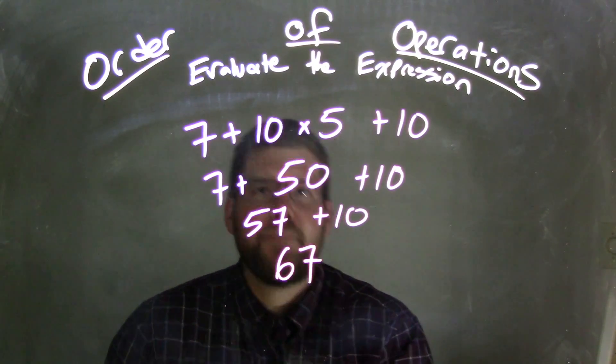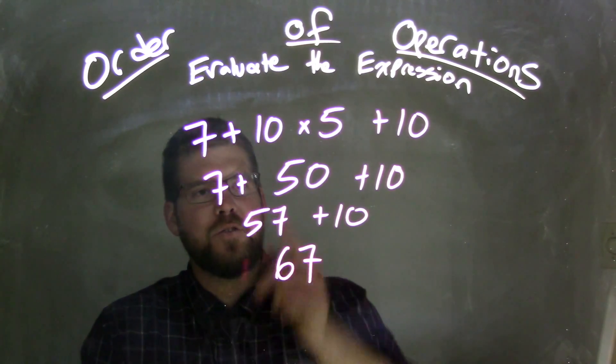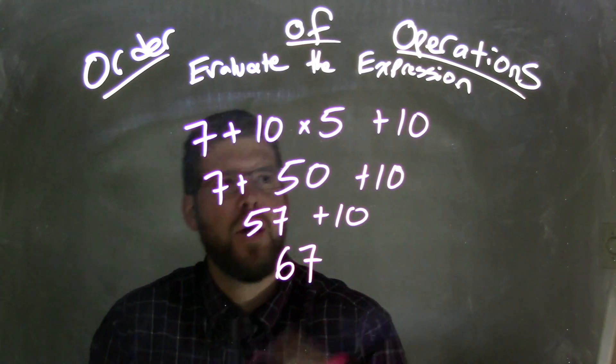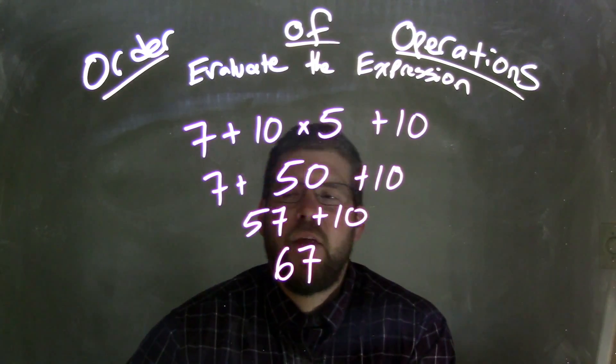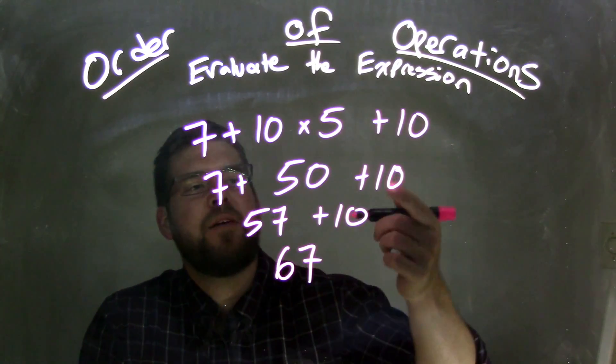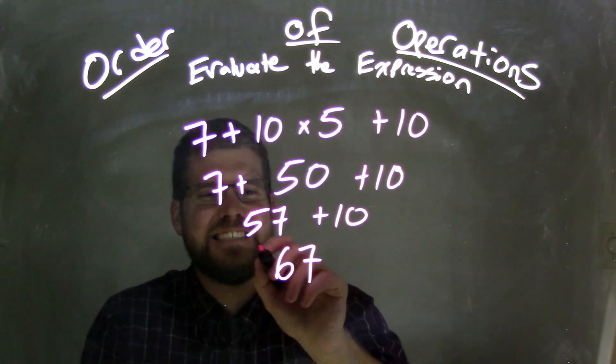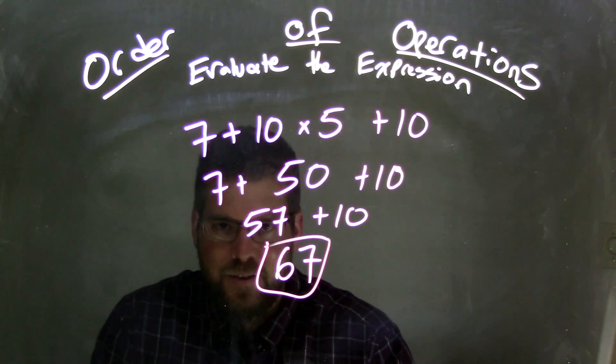So let's recap here. 10 times 5 came first. That was our 50 right there in the middle. We brought down the 7 and the 10. We add them together. 7 plus 50 is 57. And then we add the last 10 and get 67 as our final answer. Thank you.